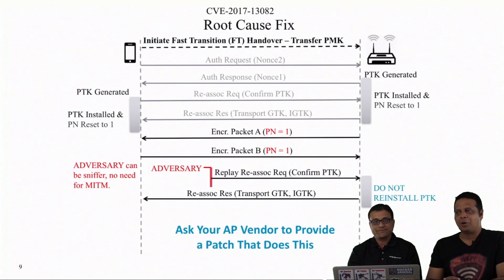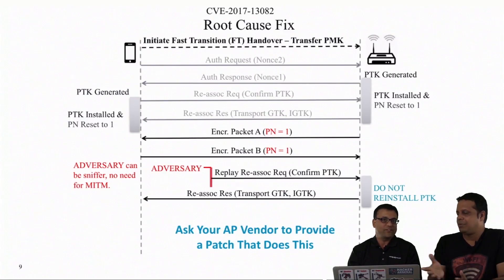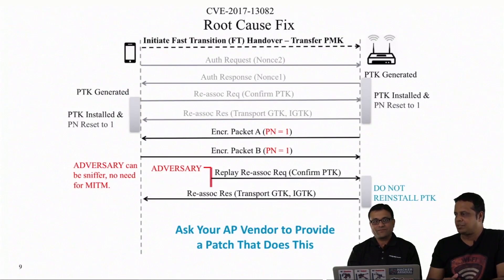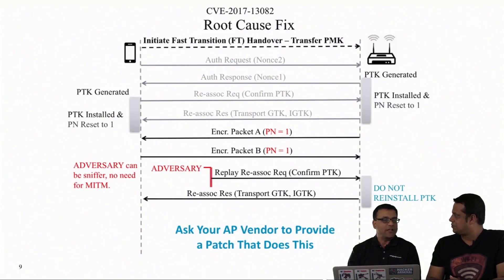A lot of patches are probably going to be rolled out silently, or vendors might be explicit about it. This is going to take a lot of time to fix across every AP and client — and may never happen for some IoT devices and smaller sensors. On the enterprise side the timeline for fixes will be much quicker, but on the consumer side some of this may never get fixed.